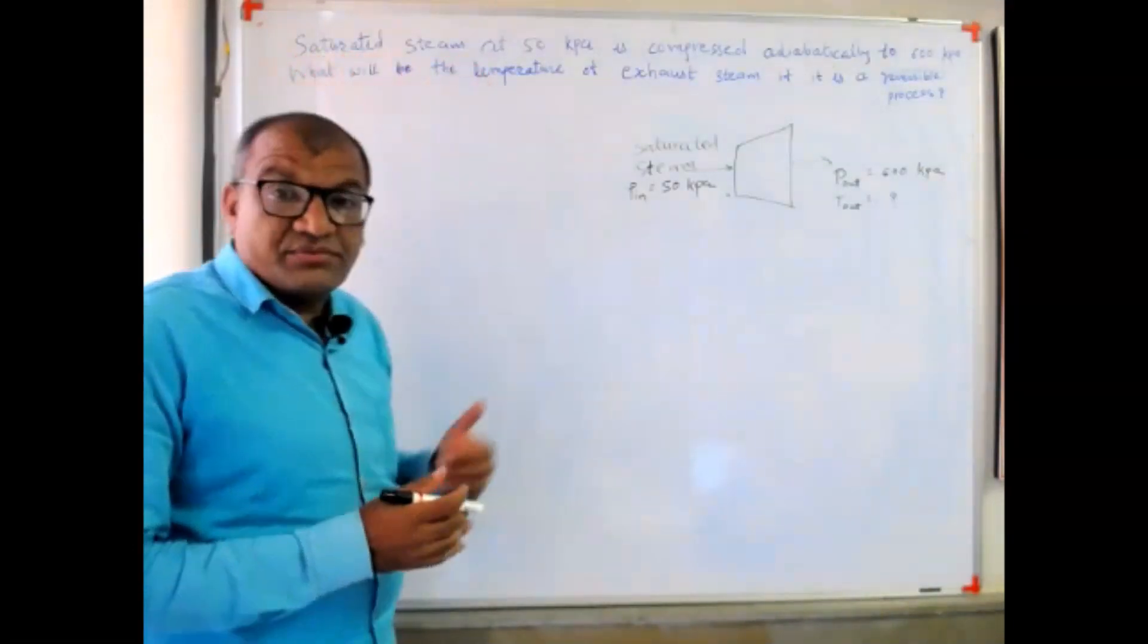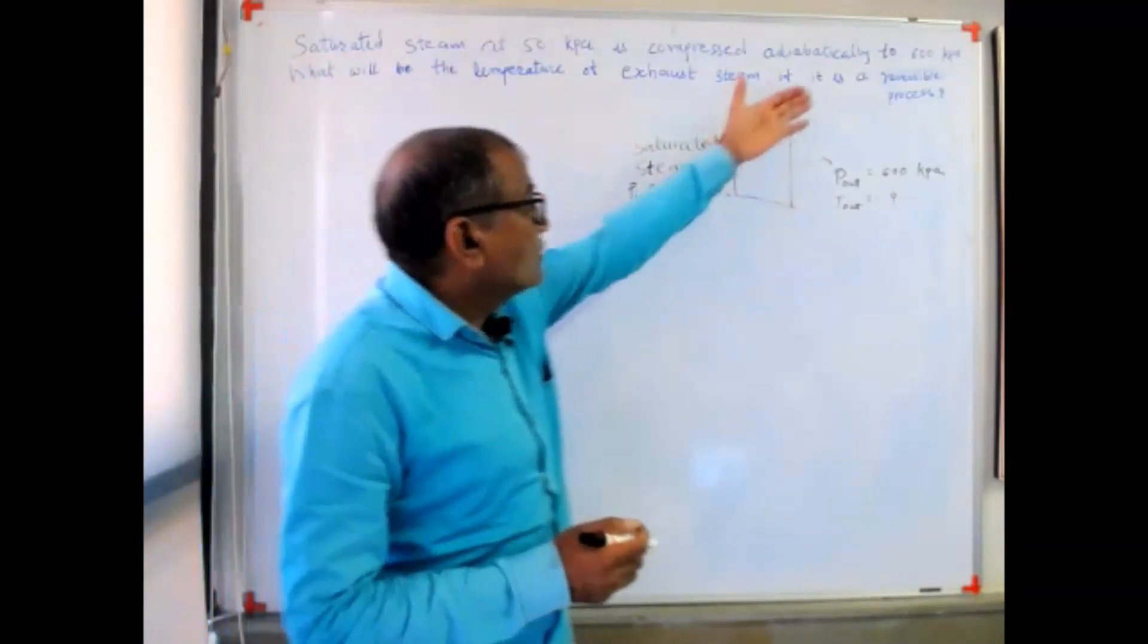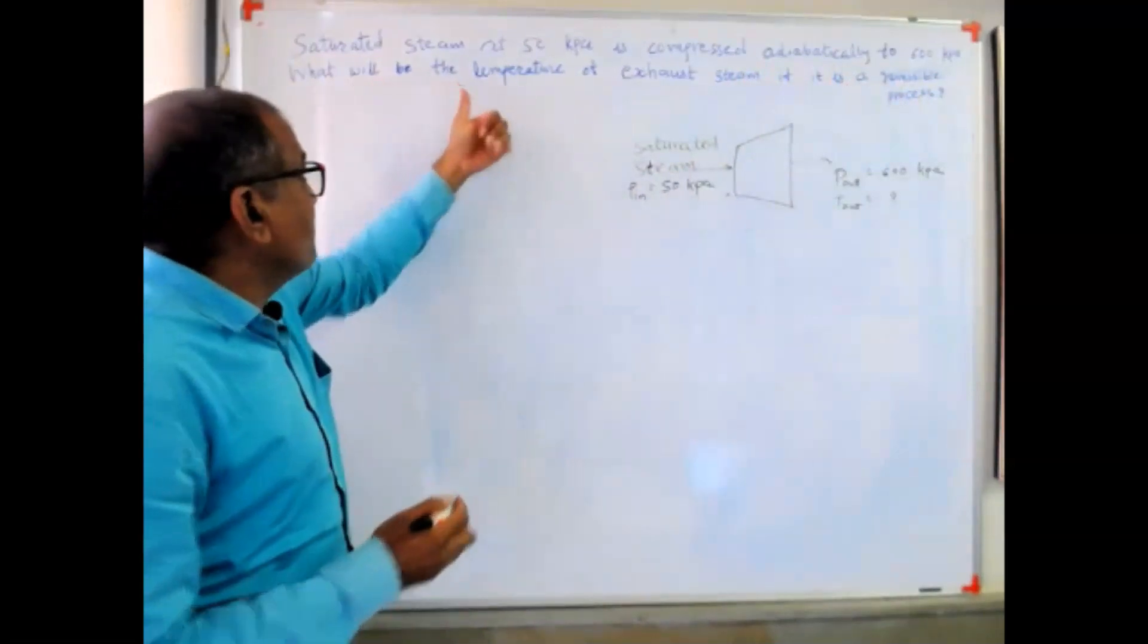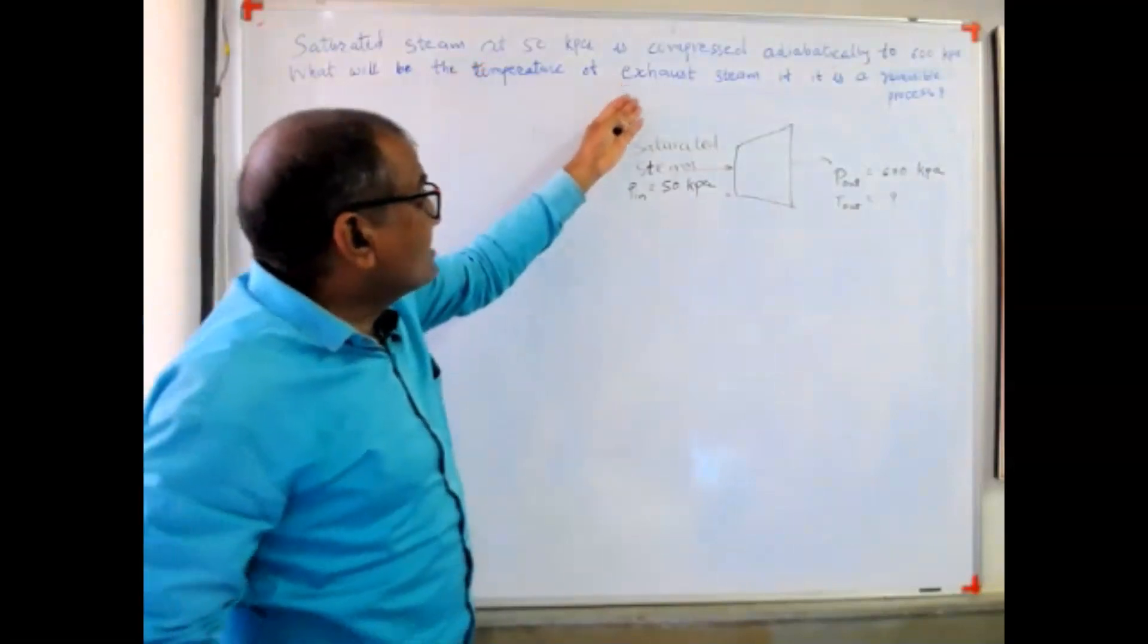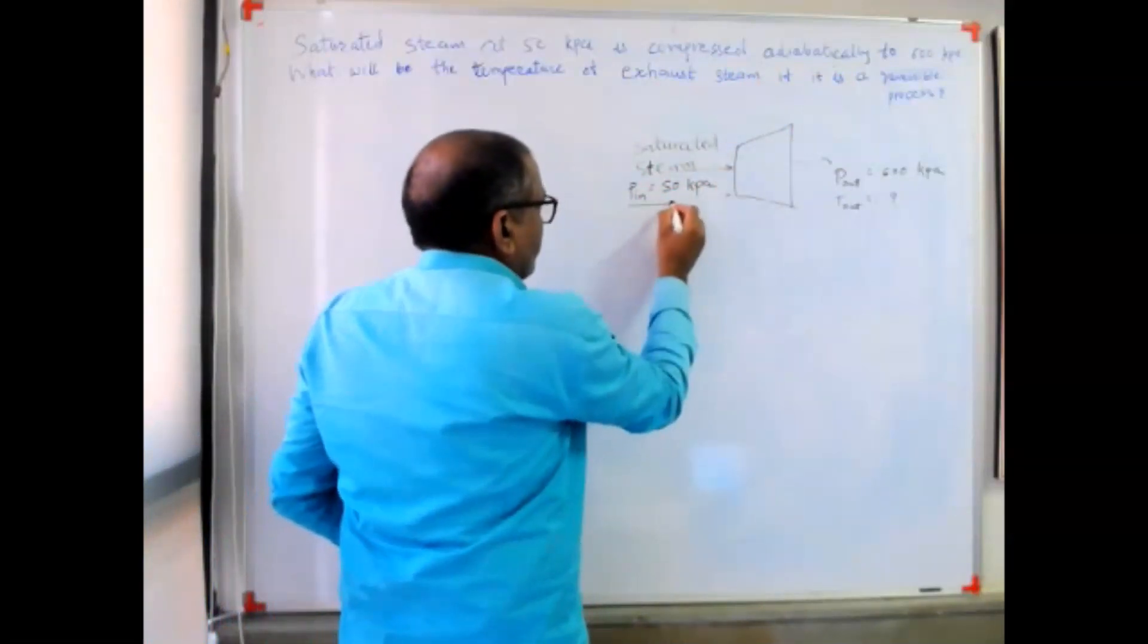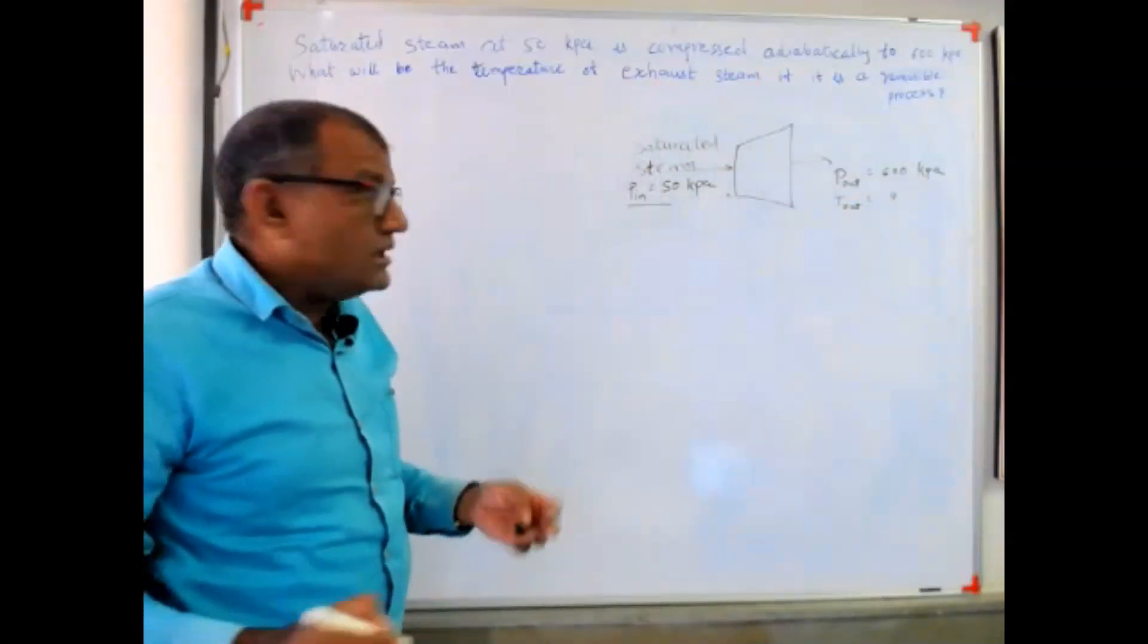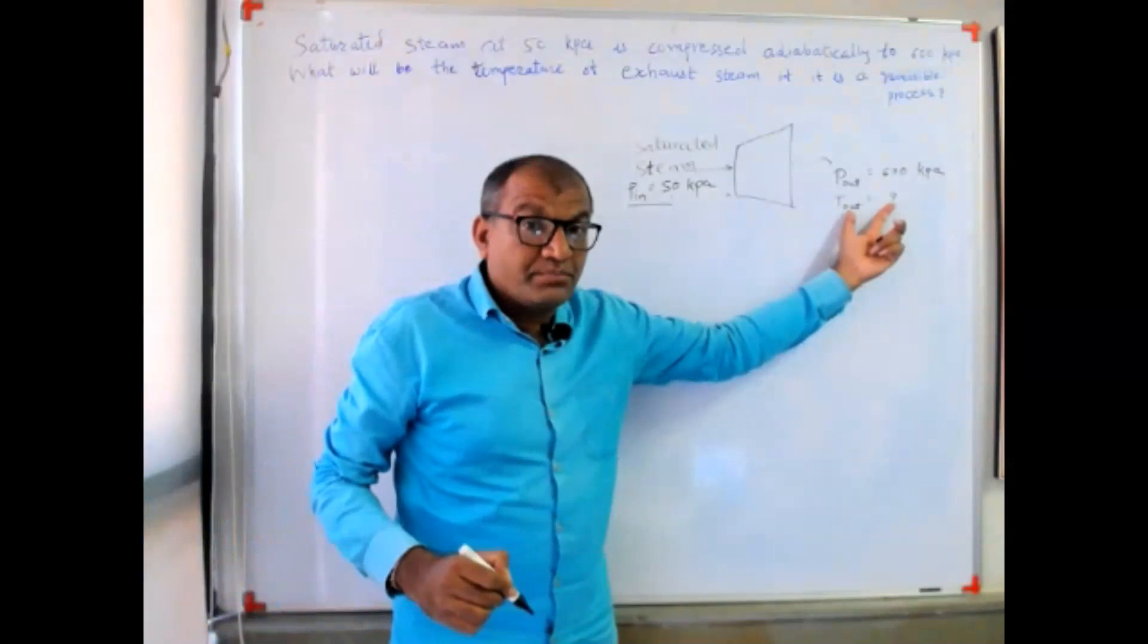Saturated steam at 50 kilopascal is compressed adiabatically to 600 kilopascal. What may be the temperature of exhaust steam if it is a reversible process? This is a compressor. The inlet pressure is 50, outlet pressure is 600 kilopascal, and we want to calculate outlet temperature.